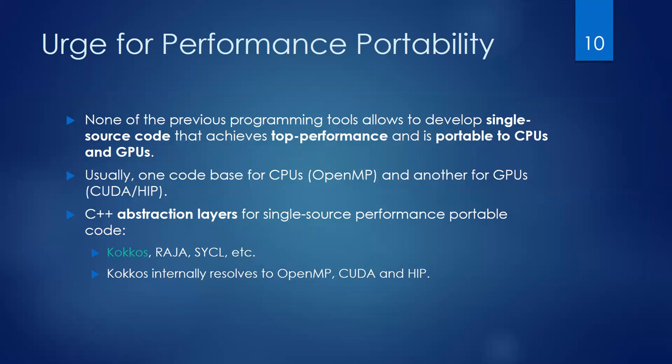None of the previous programming models I've shown allows us to target, with a single source code, top performance that is portable across CPUs and GPUs. Usually you write one piece of code for CPUs and then duplicate it for GPUs. There are C++ abstraction layers for single-source performance-portable code, such as COCOS, Raja, SYCL, and others. COCOS internally resolves to OpenMP, CUDA, HIP, and other backends.